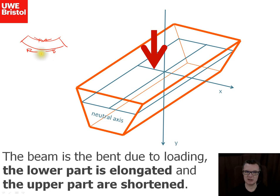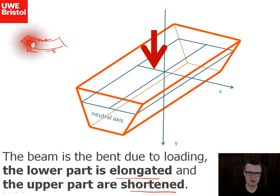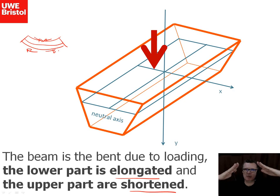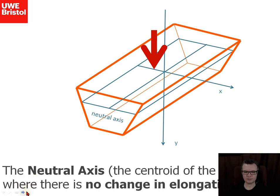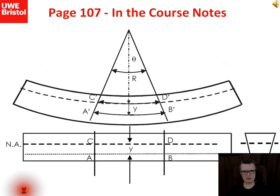The neutral axis is a point in between where the beam is getting pulled apart and elongated on the lower section and shortened on the upper section. The neutral axis turns out to be the same location as the centroid. The lower part is in tension, the upper part is in compression, and the neutral axis is the point of reference where there's no change in elongation when the load is applied.